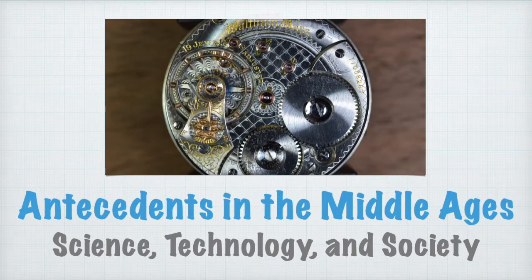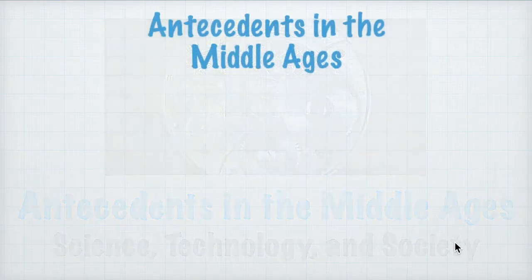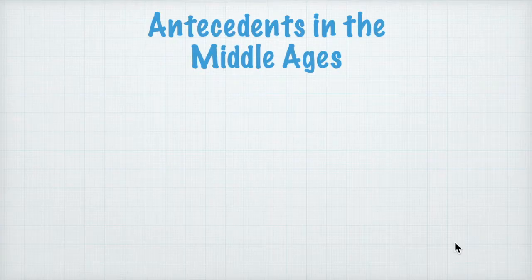Hi there. In this video we're going to continue our discussion in Science, Technology and Society — specifically we're going to talk about the antecedents in the middle ages. We're done with the ancient times and now starting the middle ages, which has three periods: the early middle ages, the middle middle ages, and the late middle ages, roughly from the 5th century until the 15th century.